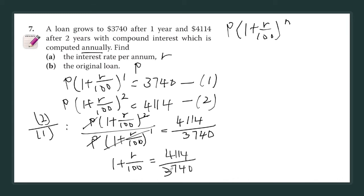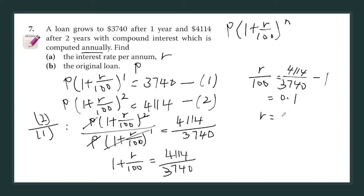So (1 + r/100) equals 4114 over 3740. That means r/100 equals 4114/3740 minus 1, which gives 0.1. Therefore r equals 0.1 times 100 = 10. So the interest rate per annum is 10 percent.